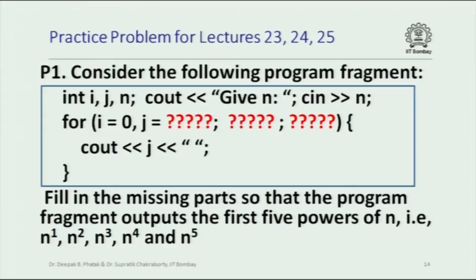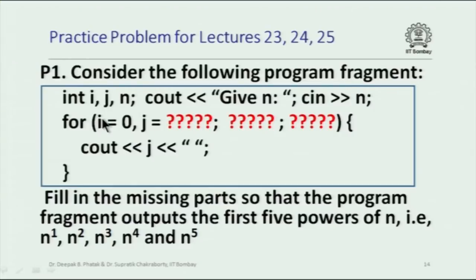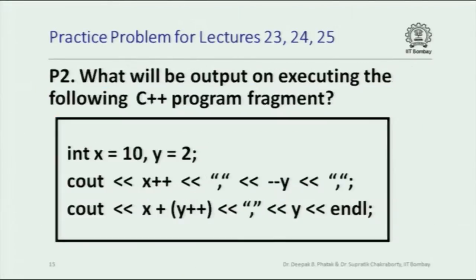Is everybody fine with this question? We just want the loop to iterate 5 times — i is doing that job and can be done in several ways. The real action with j is it has to be initialized to n and multiplied by n in every iteration. Now you can exchange your copies with your neighbors for the next problem.